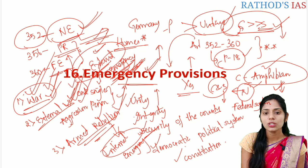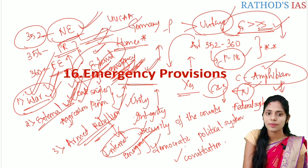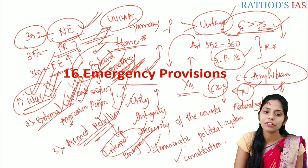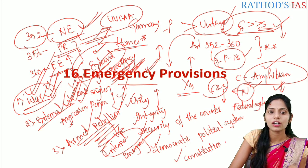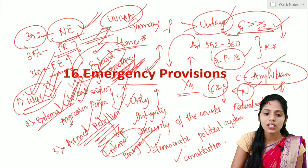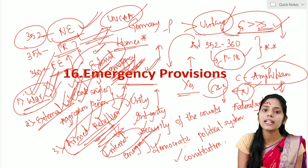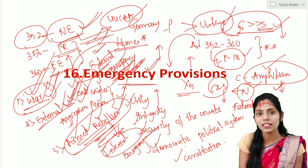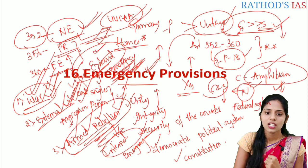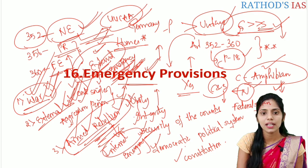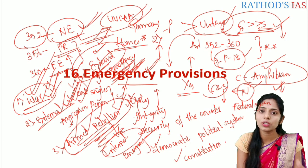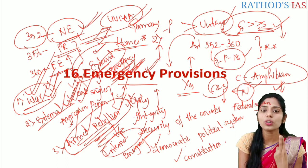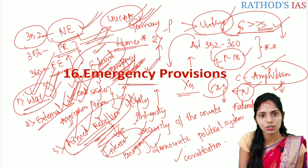Whenever you are reading about national emergency you should also refer to the 44th constitutional amendment act. The three grounds are war, external aggression, and armed rebellion. Armed rebellion was not present in our original constitution — this word was added by the 44th constitutional amendment act. Before this, the word used was 'internal disturbance,' which was misused by Indira Gandhi. Through the 44th constitutional amendment act, 'internal disturbance' was replaced with 'armed rebellion.'